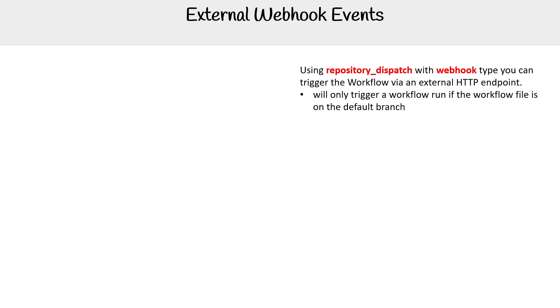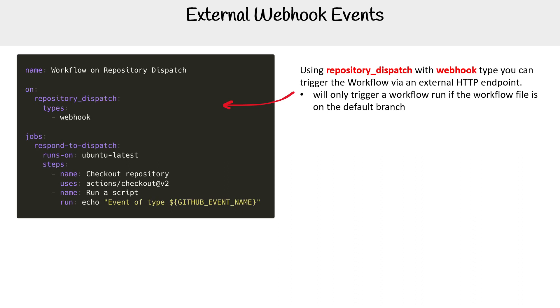One important thing to know is that it will only trigger a workflow run if the workflow file is on the default branch. Notice here we have repository dispatch and the type is set to webhook.